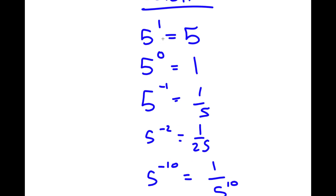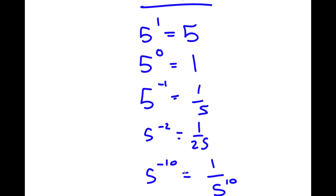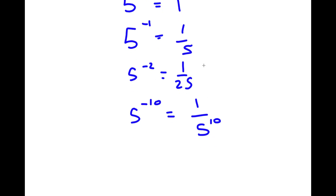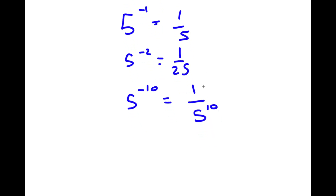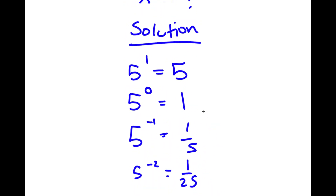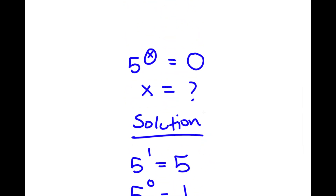So you see, as the exponent keeps on decreasing, the value is approaching 0 — it's approaching infinity in the denominator. But will it ever reach 0? Let's see if we can even find a value of x that makes this equal to 0.